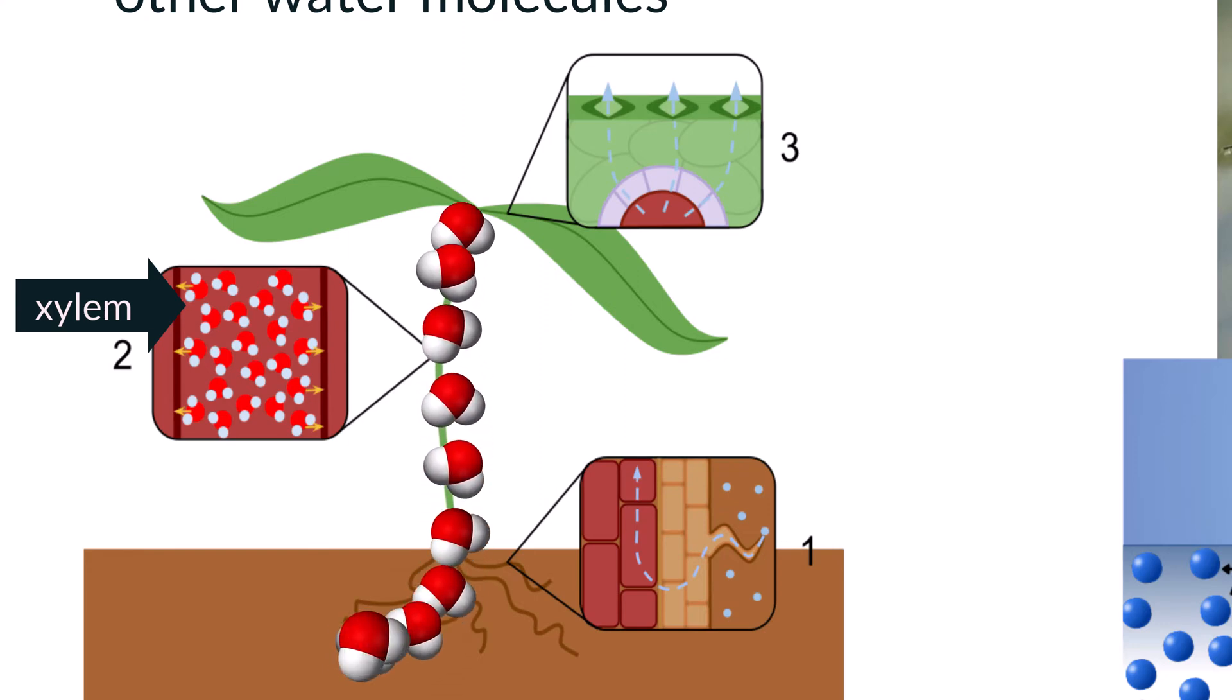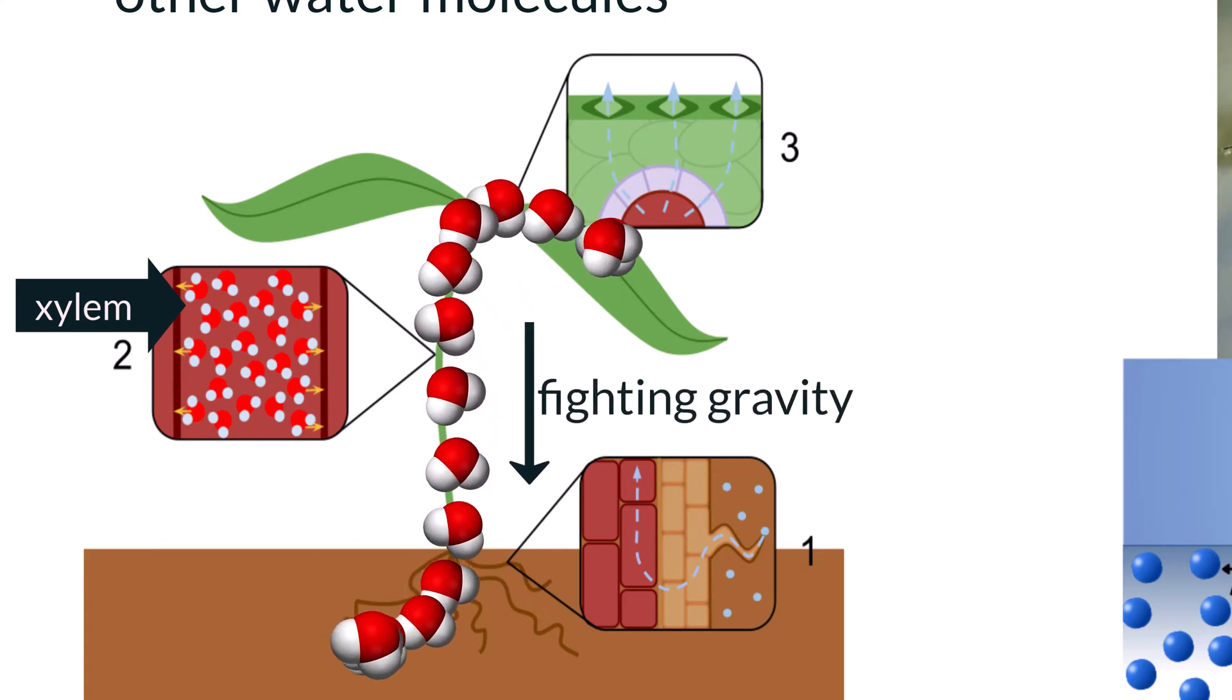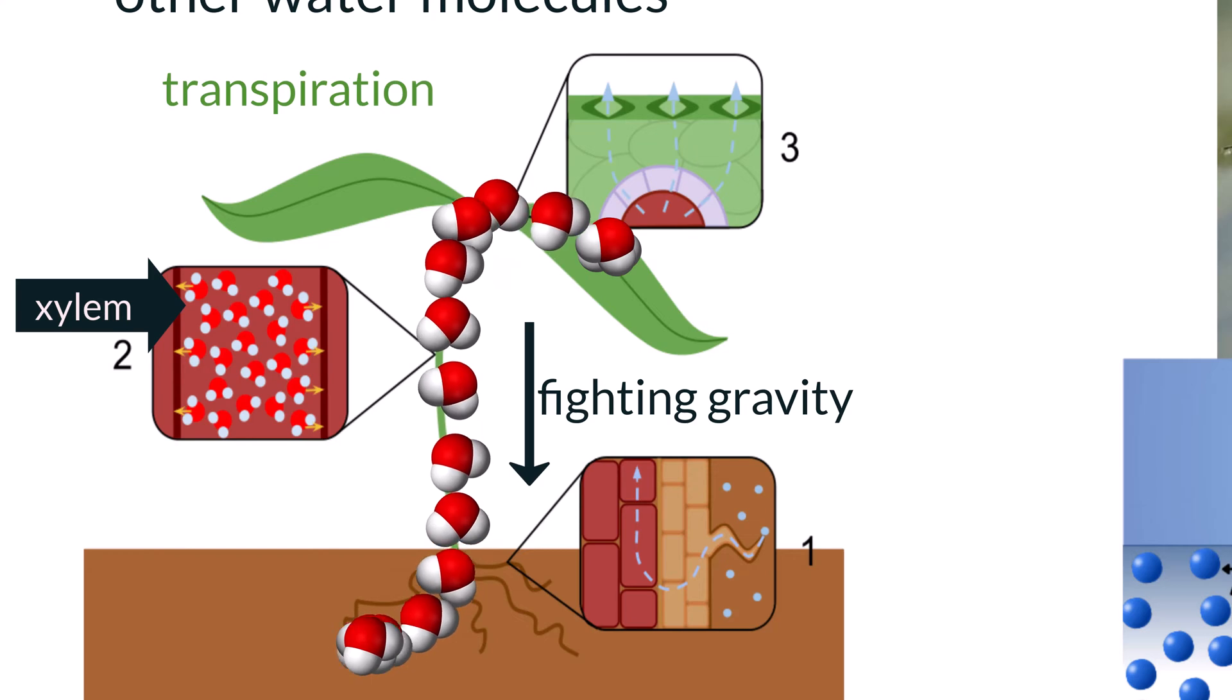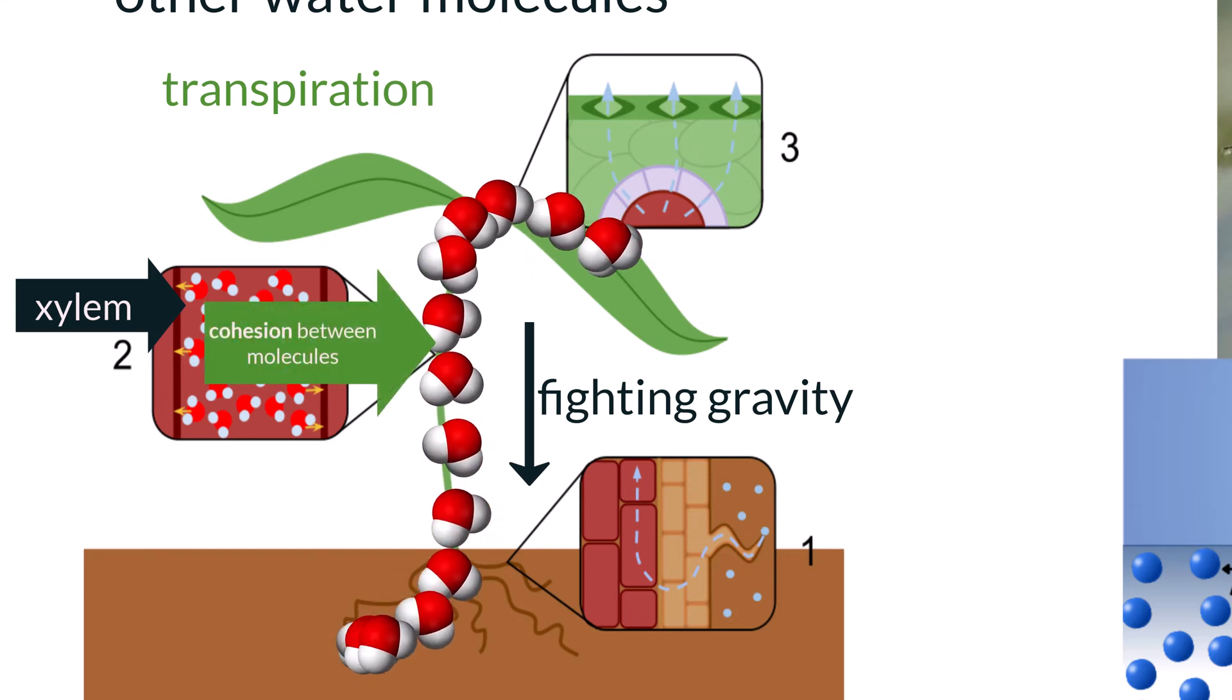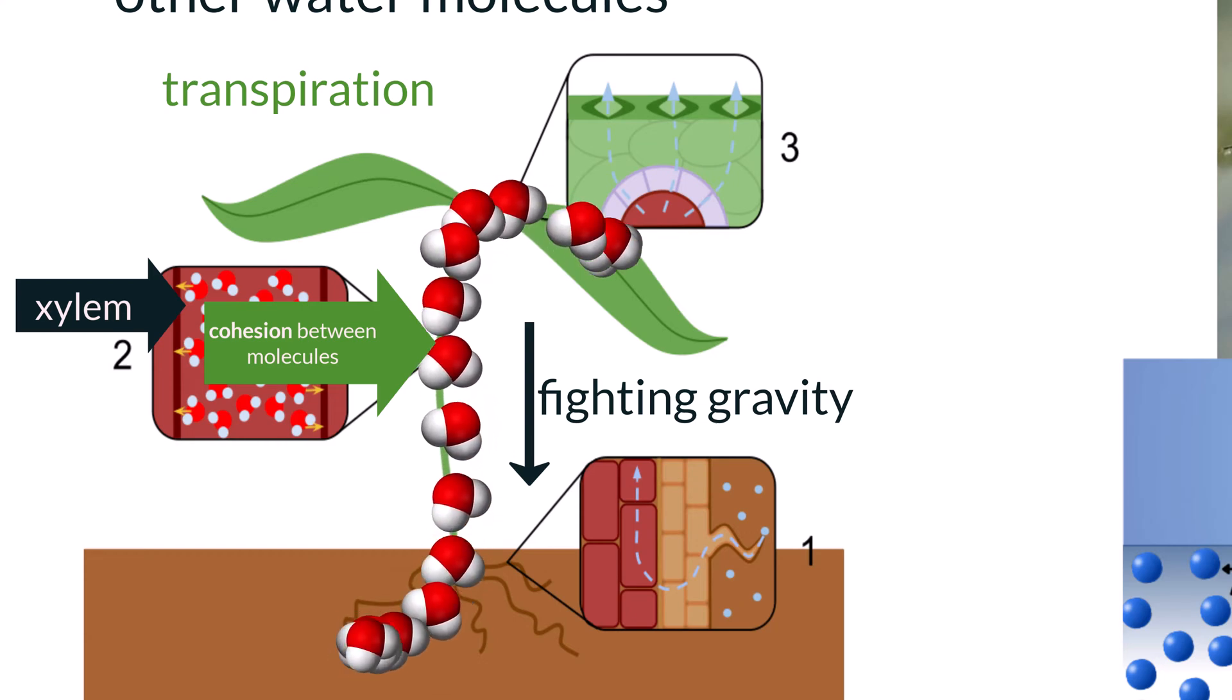As plants stand erect to grab as much sunlight as they can, the upward movement of water is fighting against the force of gravity which is pulling it down. The process of transpiration paired with the property of cohesion allows for water to make its way up despite the pull of gravity.